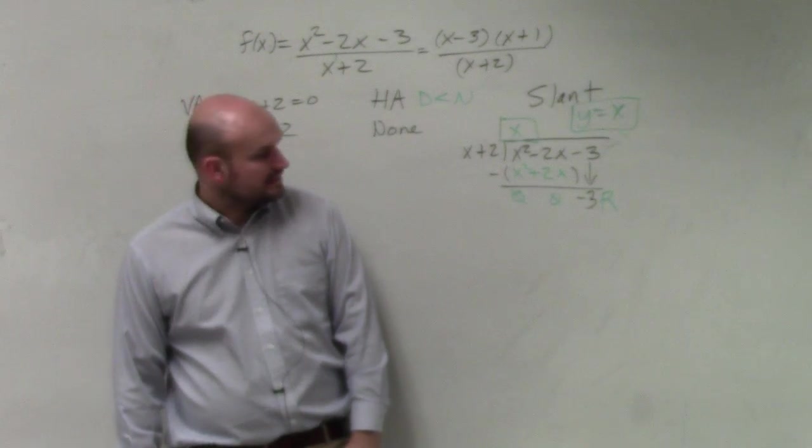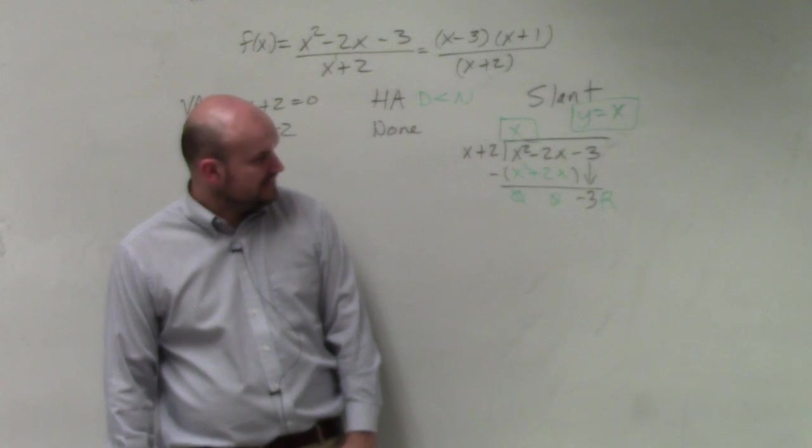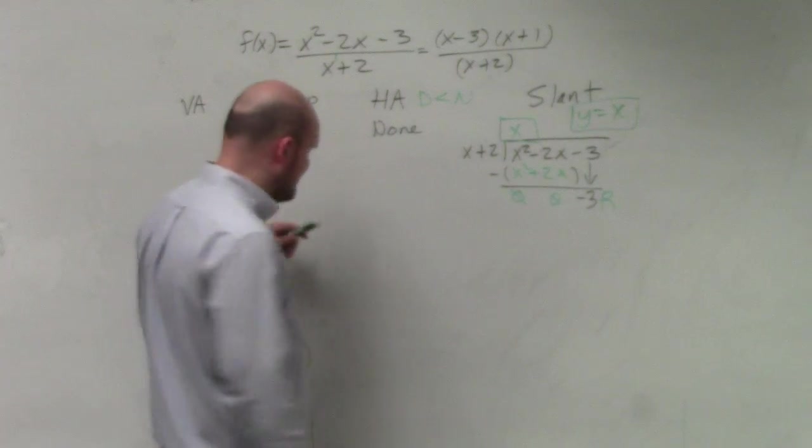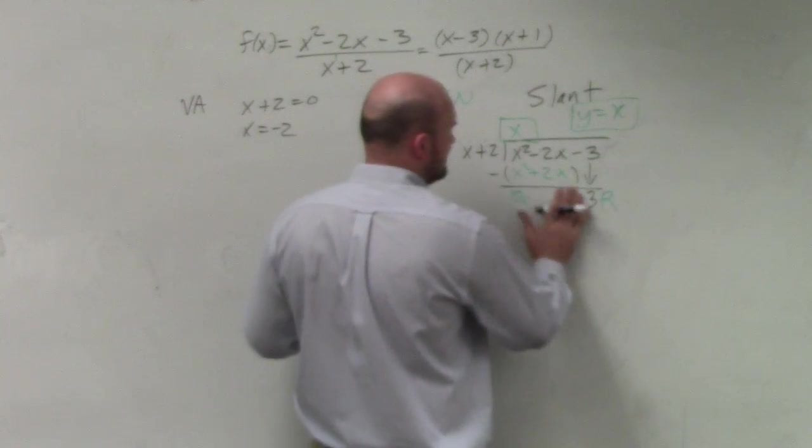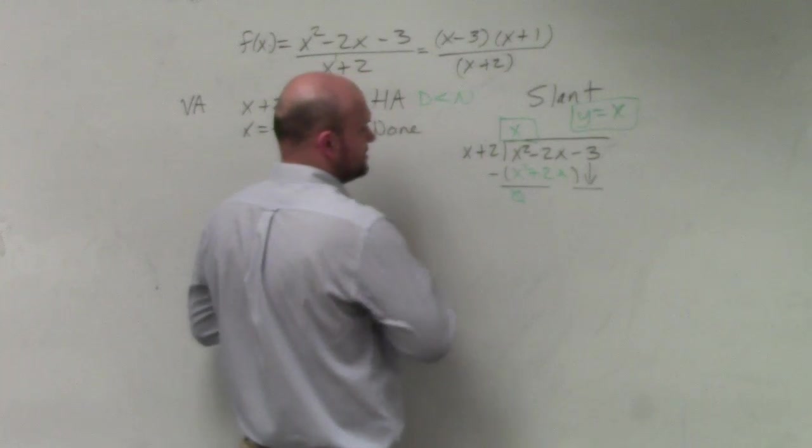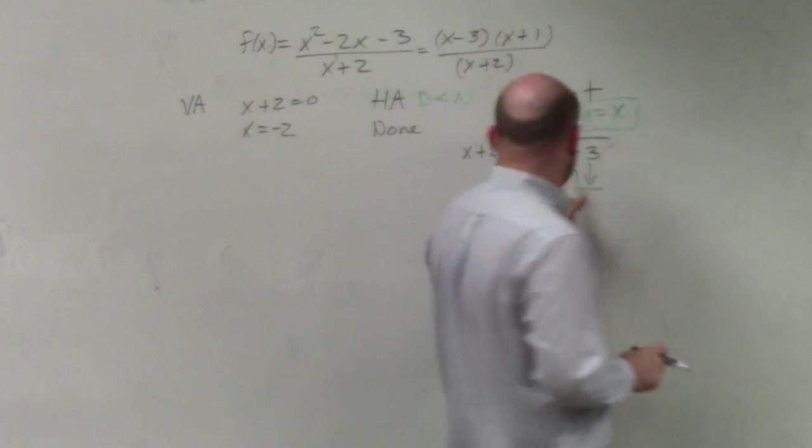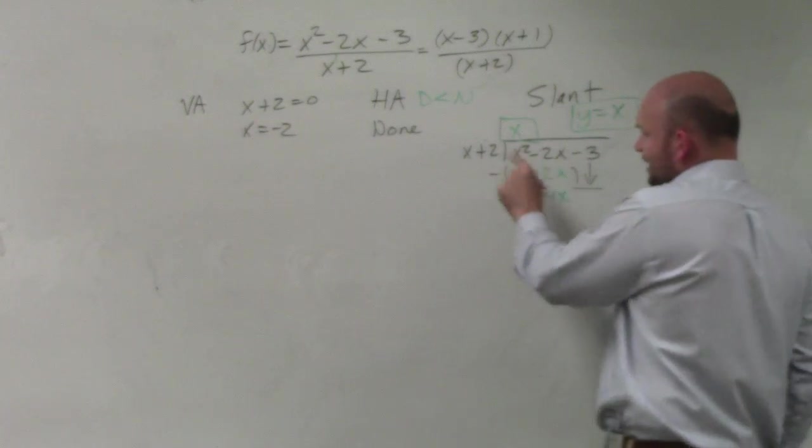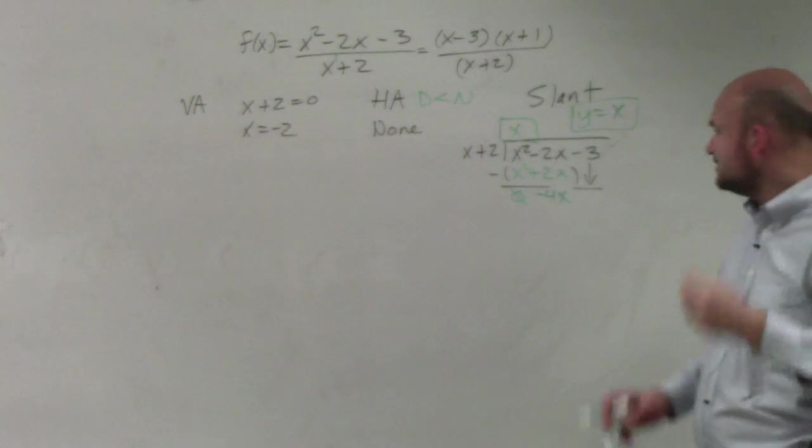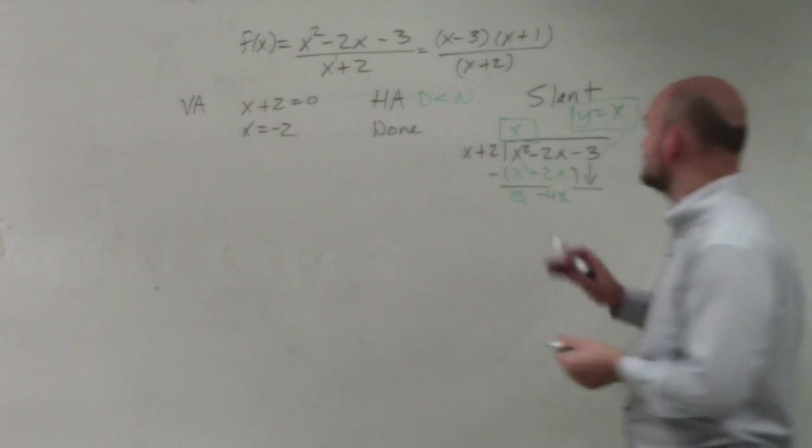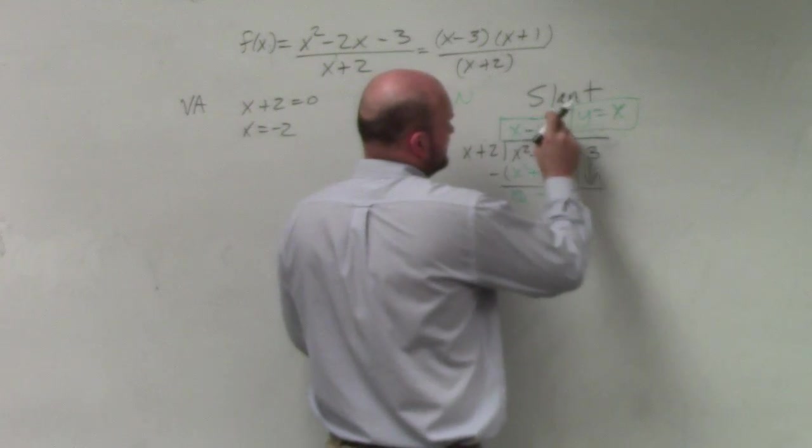Would it be negative 4x? Yeah, it would actually. You know what, I did that exact same thing. It would be, thank you very much. I was thinking about that, because actually I did that wrong. If you borrow, if you owe me $2 and you borrow two more, it would be negative 4x. Thank you. And x goes into negative 4x, minus 4 times? Thank you.